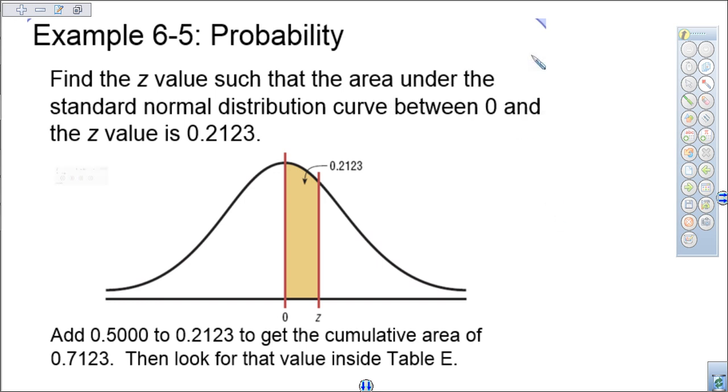All right, so let's take a look at what would happen if we went the other way. What would happen if we were given an area and we wanted to actually find the z-value?